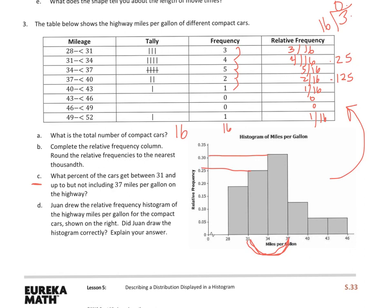Now D says, Juan drew the relative frequency histogram of the highway miles per gallon for the compact car shown to the right. Did Juan draw the histogram correctly? Technically, it looks like he didn't. And I'm noticing this because he kind of left out a few things here that he needs. He stopped at 46, and it looks like that I have two more in here, 46 to 49, and then 49 to 52. And the reason why I have to draw those is because I actually had a value of between 49 and 52.